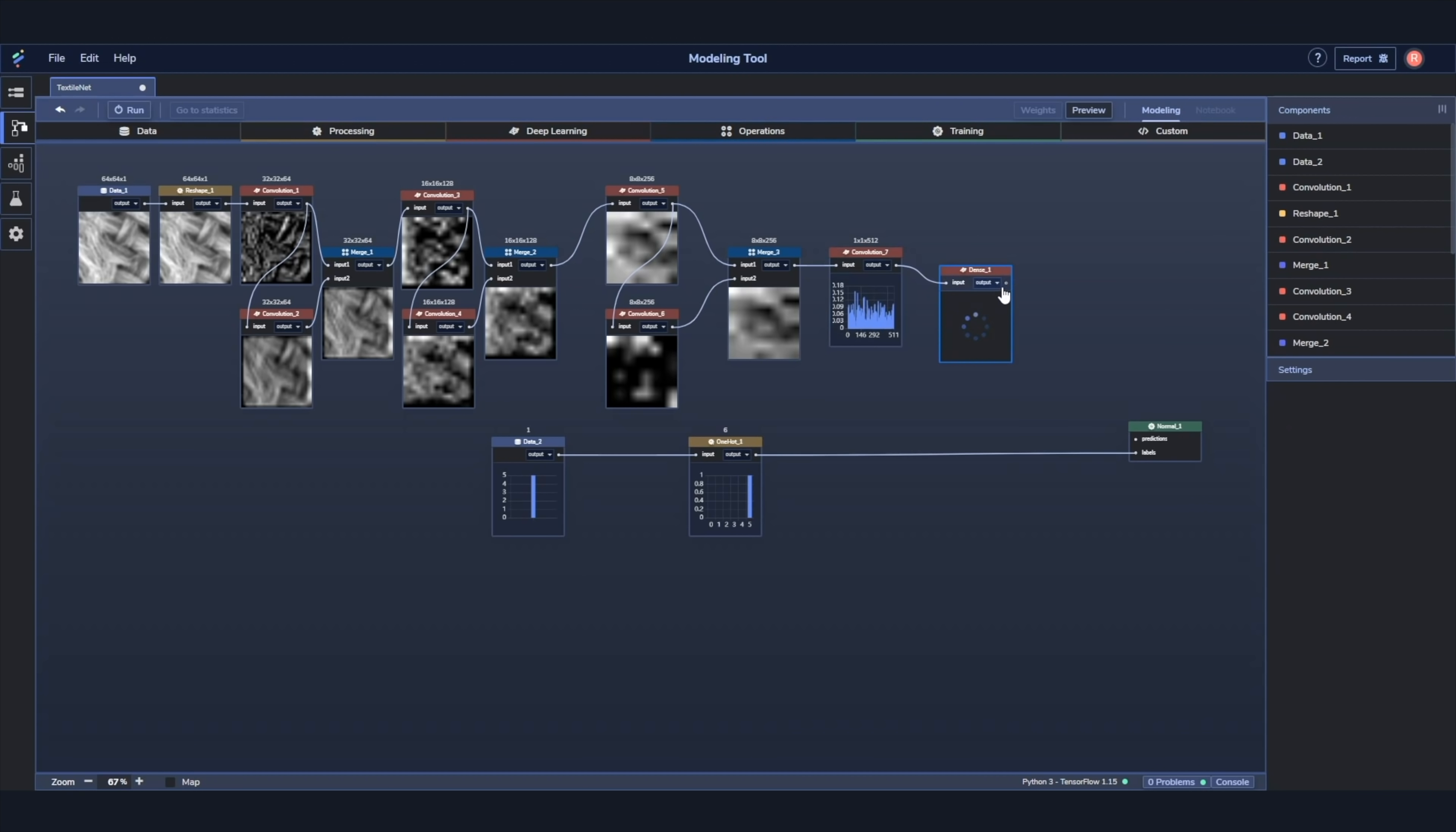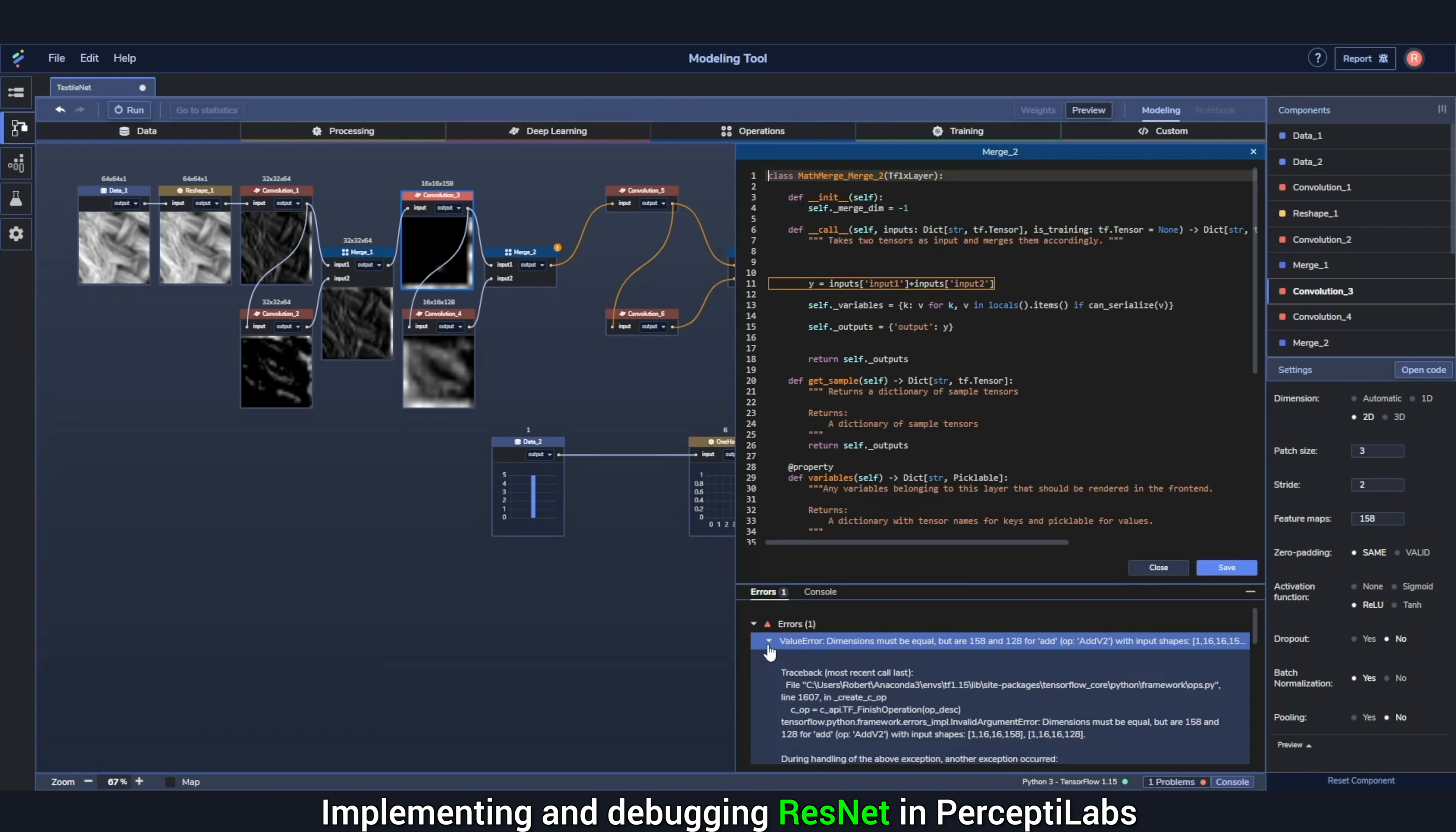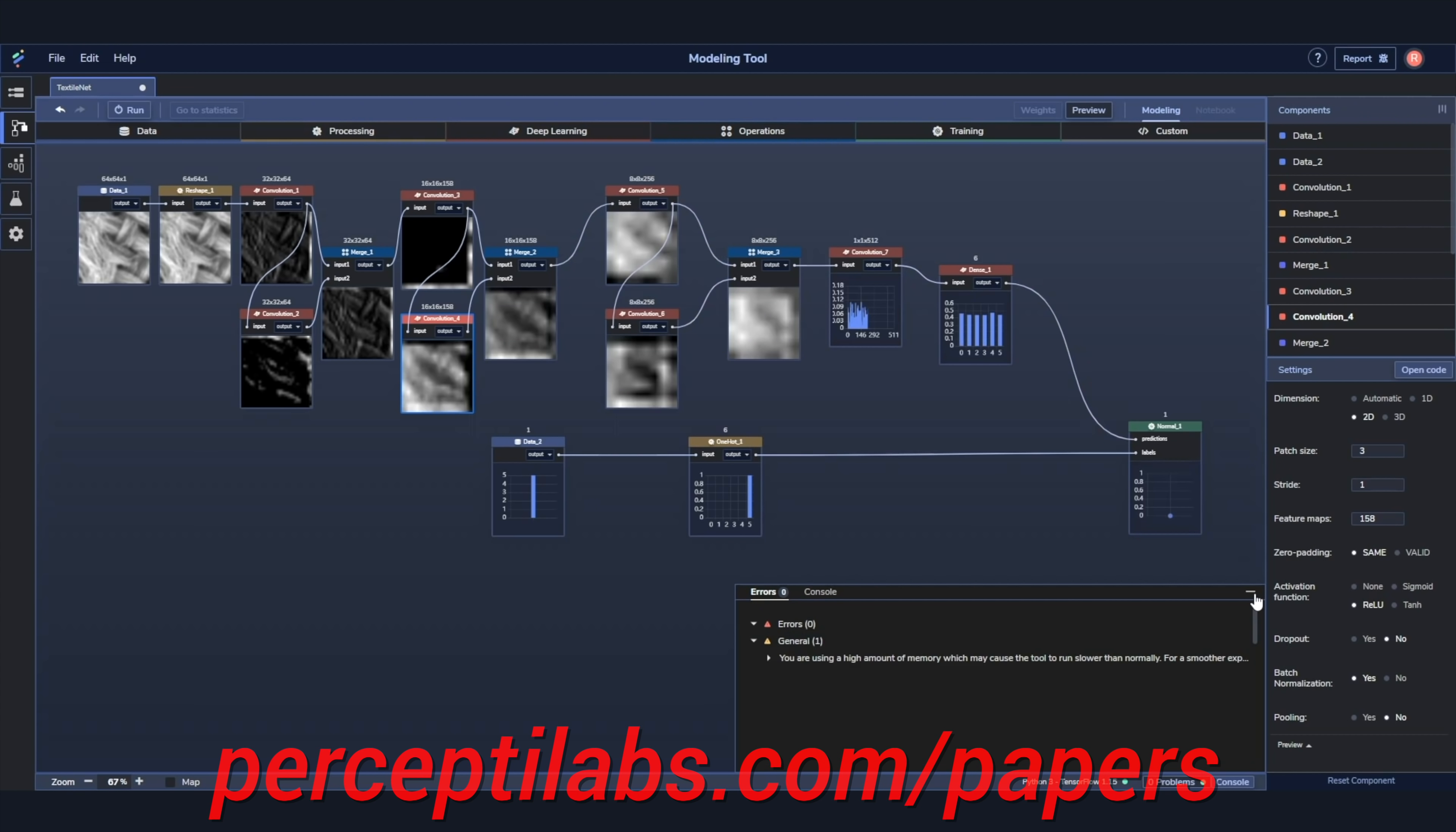PerceptiLabs is a visual API for TensorFlow, carefully designed to make machine learning as intuitive as possible. This gives you a faster way to build out models with more transparency into how your model is architected, how it performs, and how to debug it. Look, it lets you toggle between the visual modeler and the code editor. It even generates visualizations for all the model variables and gives you recommendations both during modeling and training, and does all this automatically.